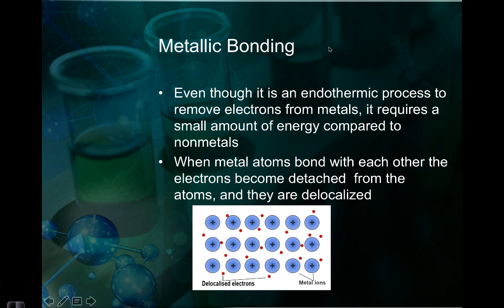When we look at removing electrons from metals, we know that it takes less energy to remove those electrons than with nonmetals. So it's still an endothermic process — it still requires some energy — but it requires a smaller amount when we compare that to nonmetals.